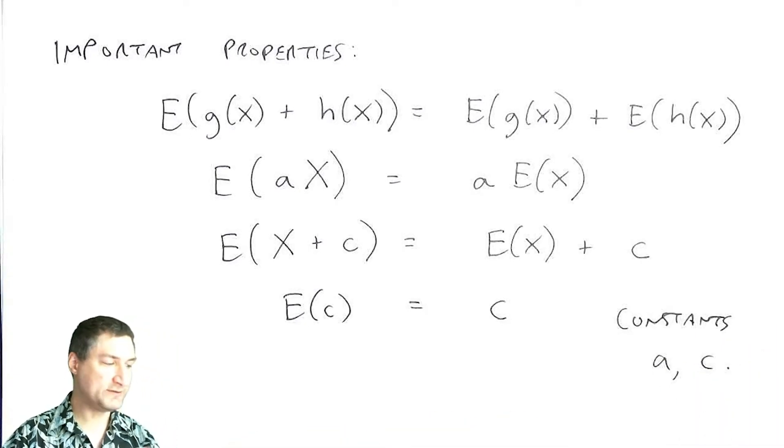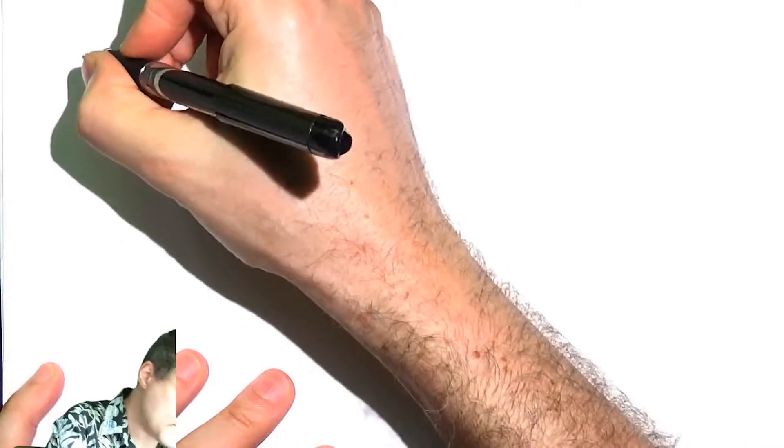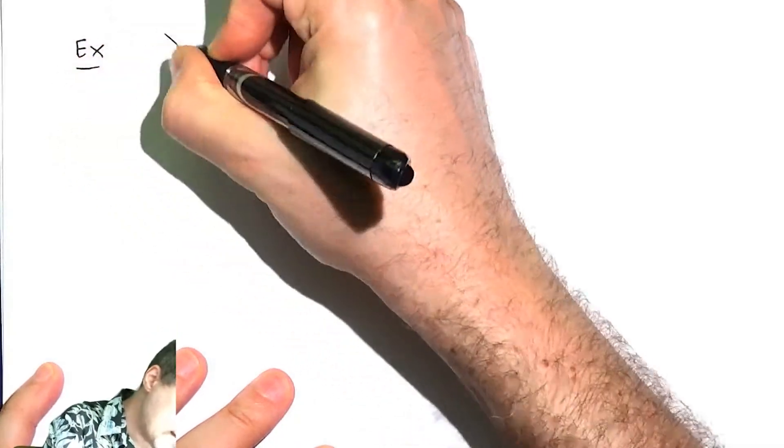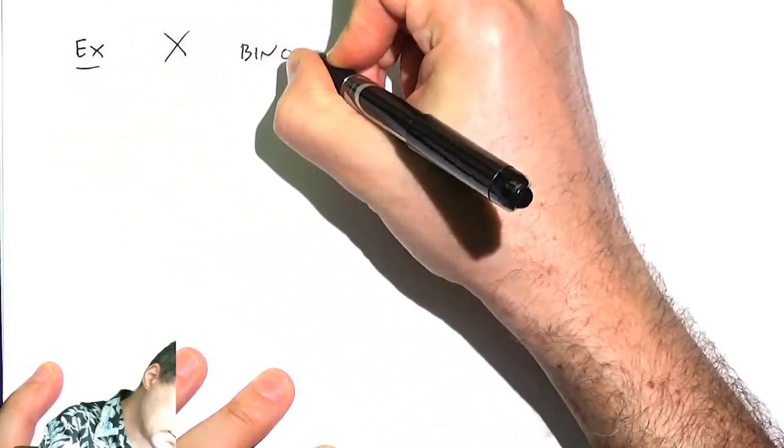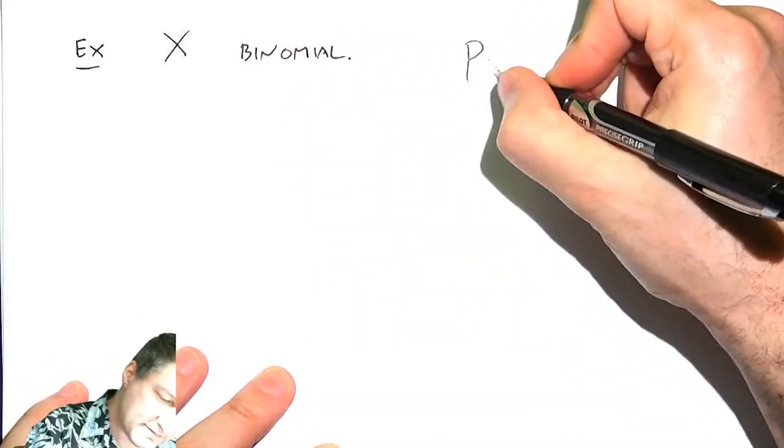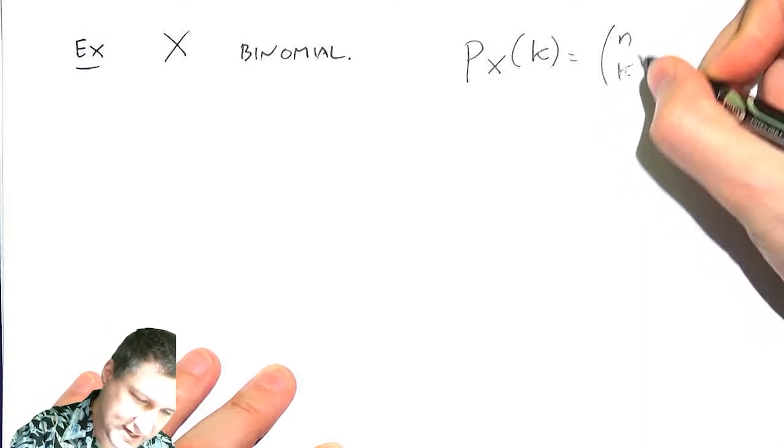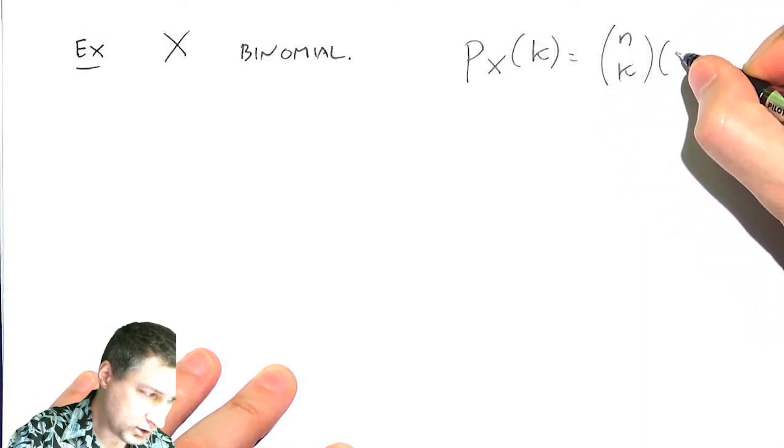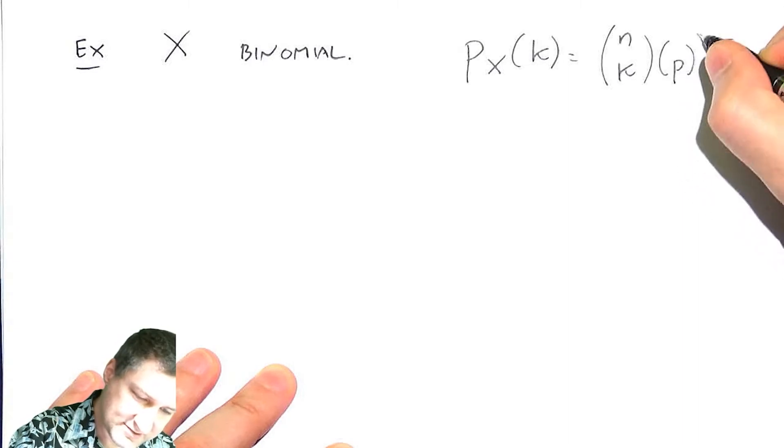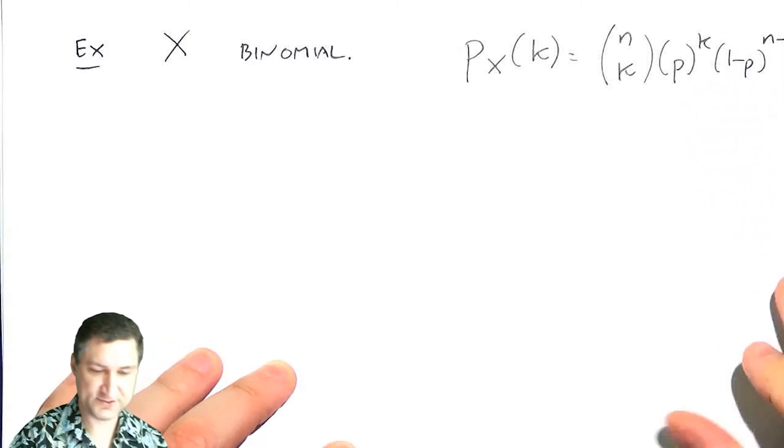So last time I kind of alluded to the fact of how would I compute the expected value of the binomial random variable. So let's talk about x is a binomial random variable. So what is the PMF of that? Remember, it's got this combinatorial piece, n choose k, and then I have p successes and 1 minus p failures.